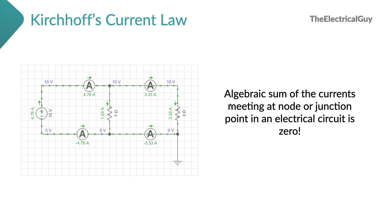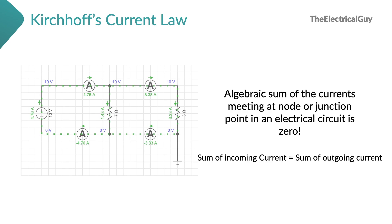So it states the algebraic sum of the currents meeting at the node or junction point. The node is the point at which two or more circuit elements are connected in the circuit. Incoming current plus outgoing current — the sum will be zero. We can also write it as: sum of incoming current is equal to sum of outgoing current. This is Kirchhoff's Current Law, and it is very easy to understand.